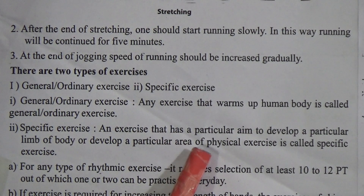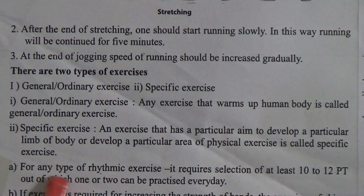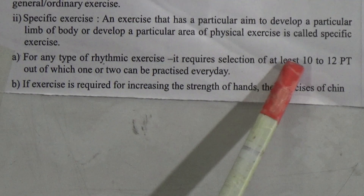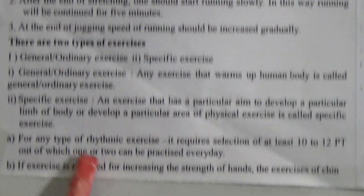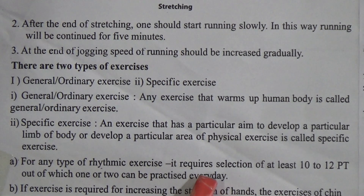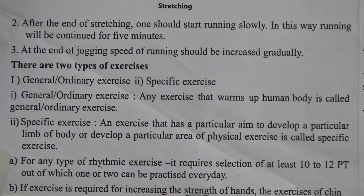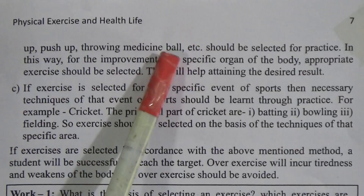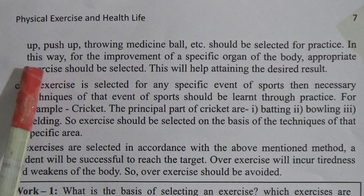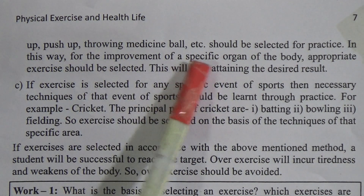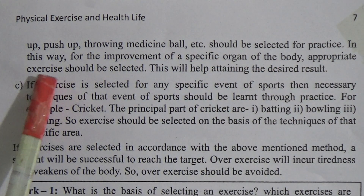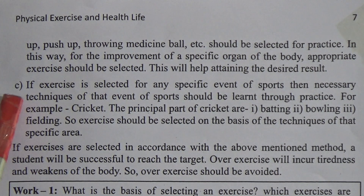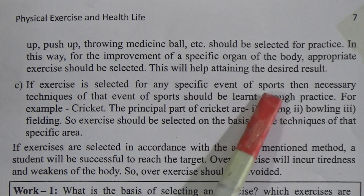For any type of athletic exercise, it requires selection of at least 10 to 12 items, out of which one or two can be practiced every day. If exercise is required for increasing the strength of hands, exercises such as chin-up, push-up, and throwing the medicine ball should be selected for practice. In this way, for the improvement of a specific organ of the body, appropriate exercise should be selected to help attain the desired result.